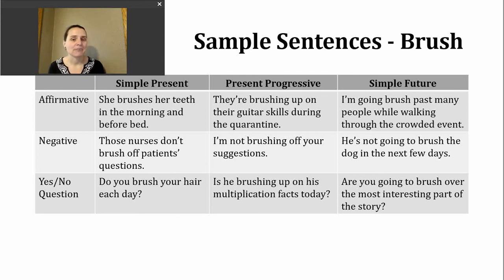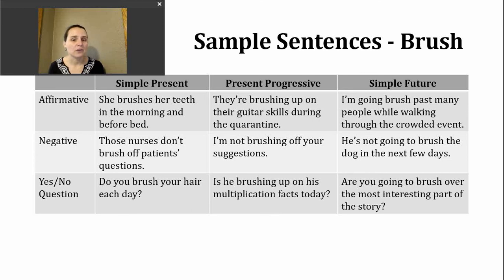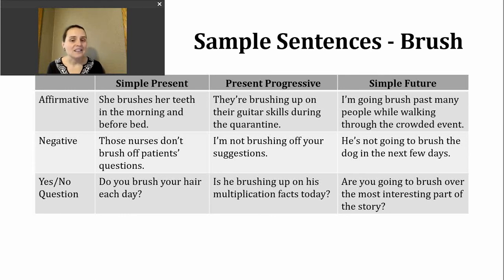Here is an example: they're brushing up on their guitar skills during the quarantine. To make the negative present progressive, we just need to insert 'not' after our 'be' verb. Example: I'm not brushing off your suggestions. For a present progressive question, we start with our 'be' verb, then the subject, then the -ing form. Example: is he brushing up on his multiplication facts today?